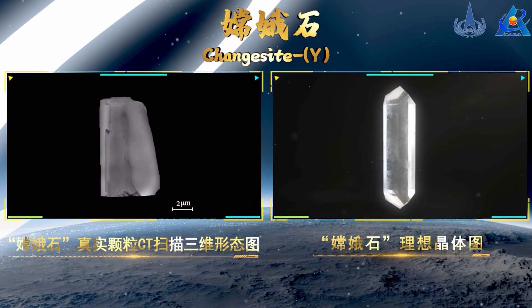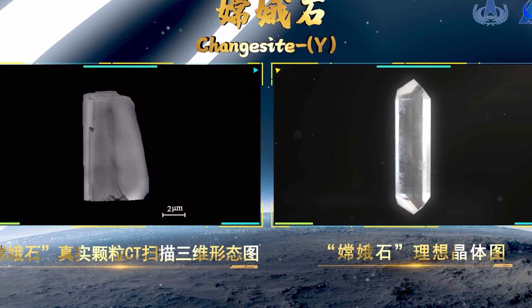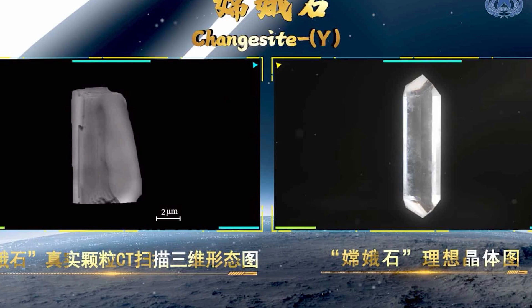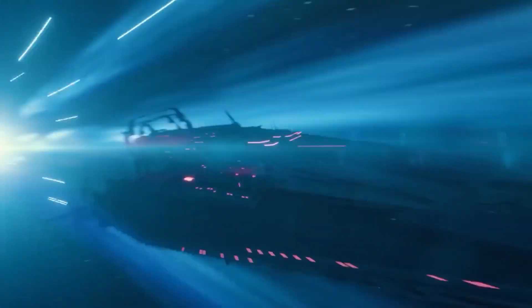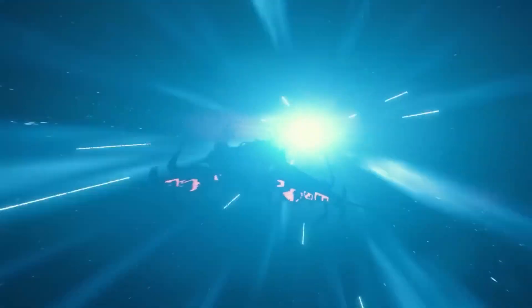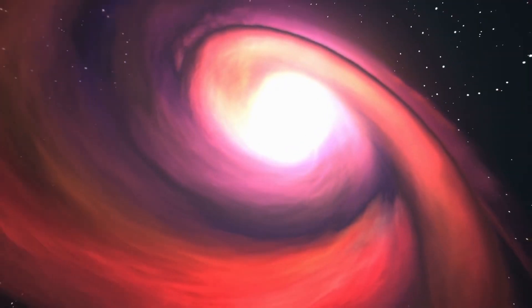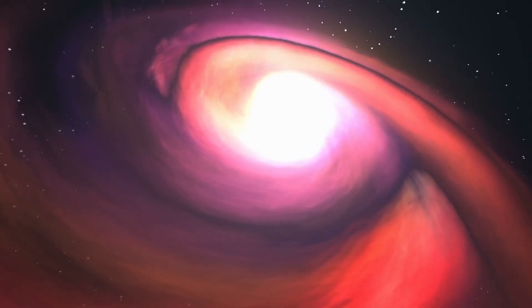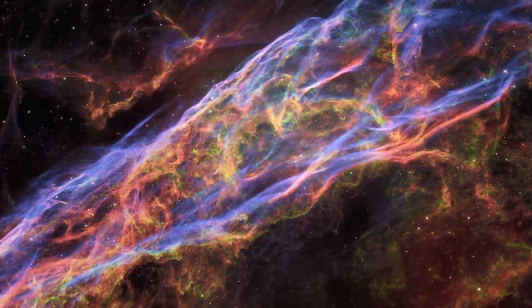The recently found mineral known as Change Site Y is a columnar crystal that is transparent and colorless. After scrutinizing lunar basalt pieces obtained by the expedition, a research team from the Beijing Research Institute of Uranium Geology, which is a subsidiary of the China National Space Administration, made this discovery.